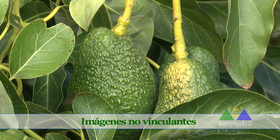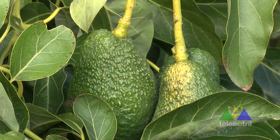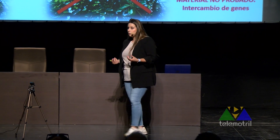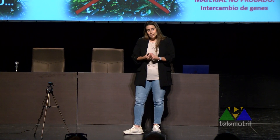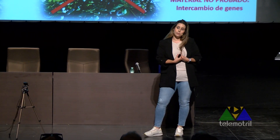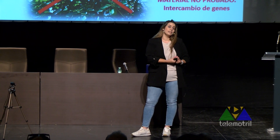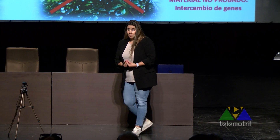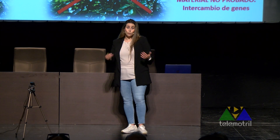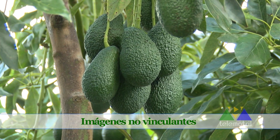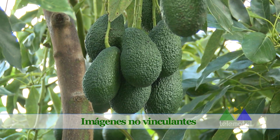¿Qué pasa con el cultivo in vitro? Que actualmente, a nivel comercial, no se ha conseguido propagar este material adulto. Es muy complicado porque el aguacate es una especie muy recalcitrante. Entonces, ¿qué se está haciendo? Están cogiendo material que proviene de una semilla. Ese material es joven y es mucho más fácil de multiplicar in vitro. Pero si cogemos este material de una semilla, estamos cogiendo material no conocido, fruto de una polinización cruzada, con mucha variabilidad genética.